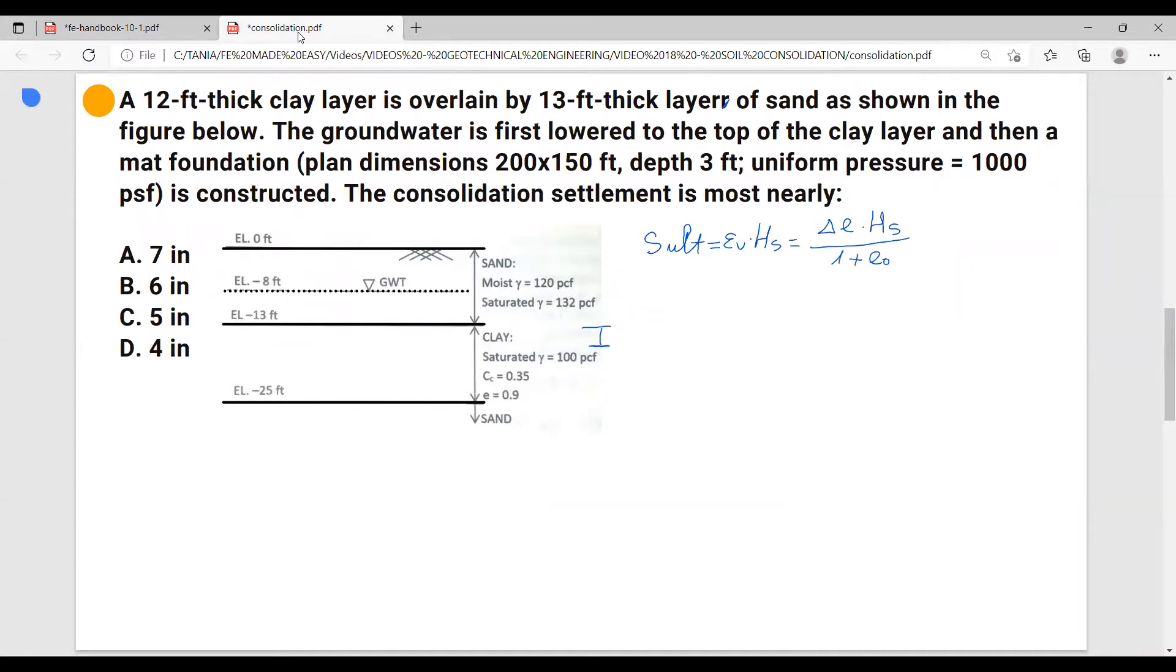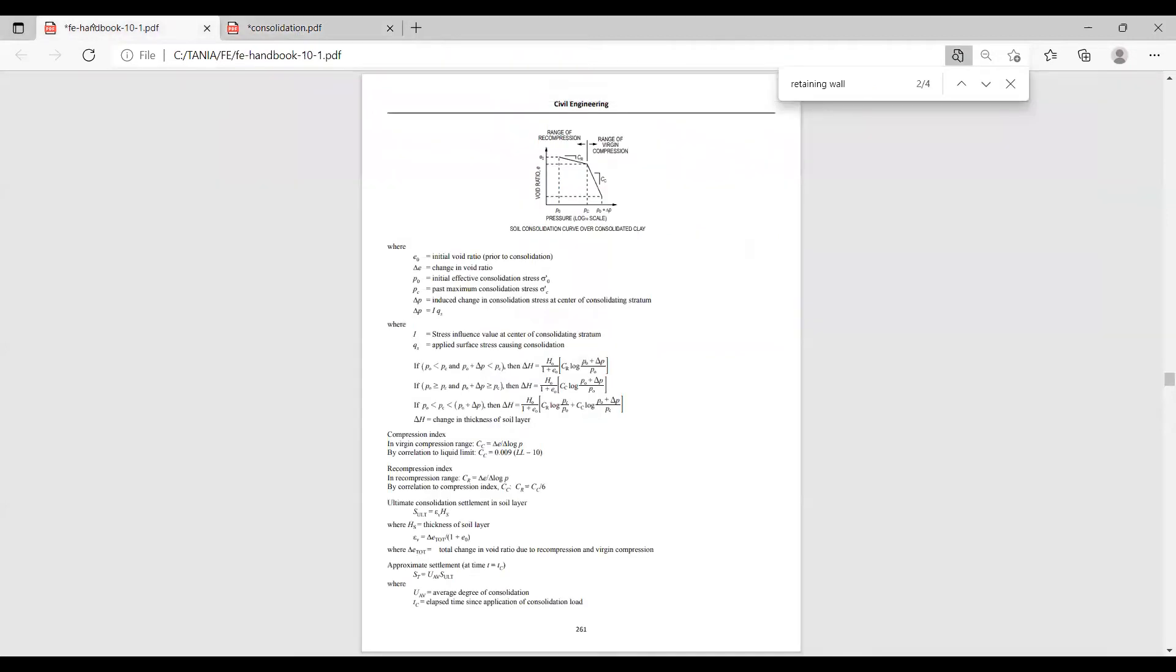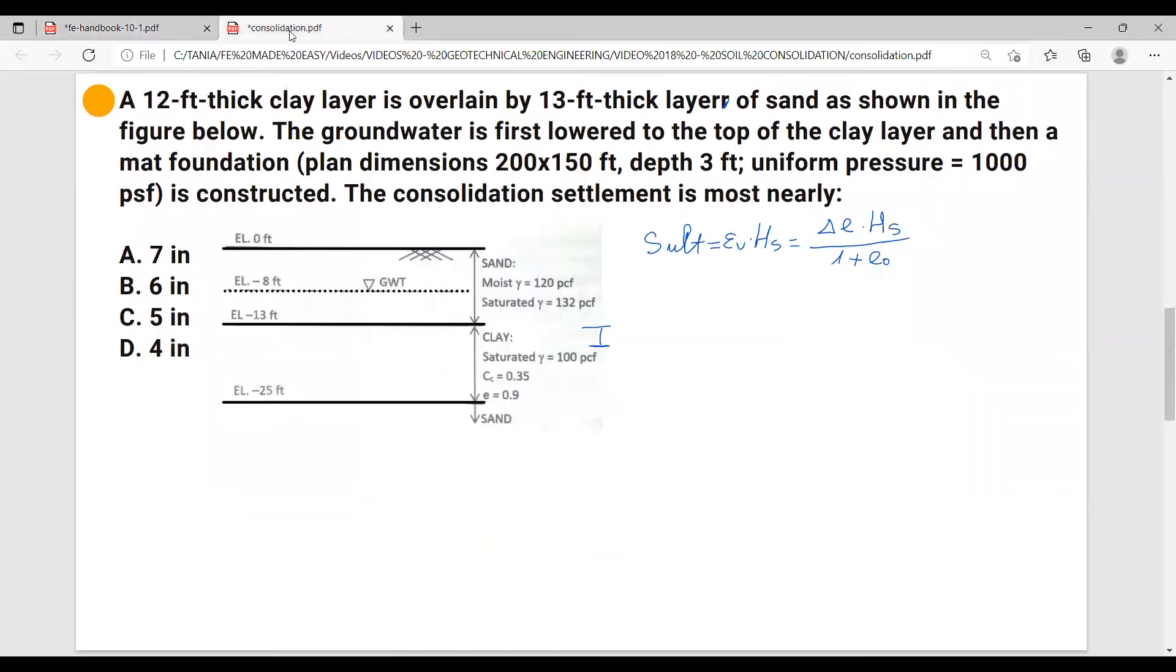We are given e0 is 0.9. We have to calculate delta e in this case. So in order to calculate delta e, let's see what is the formula for delta e. And delta e will be able to calculate it from the compression index formula. Compression index equals delta e over delta log pressure. Okay, let's calculate the pressure for the pre-existing condition, and then we'll calculate the pressure after the foundation is being installed so that then later we'll be able to calculate delta e.